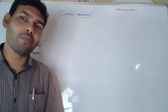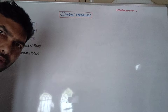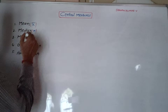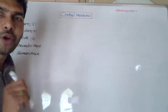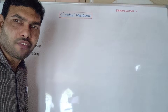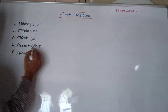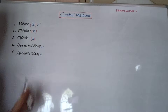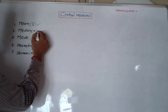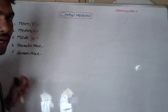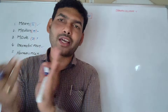In central measures, we have three main types. Mean, median, and mode. Under these, we also have geometric mean and harmonic mean. Central measures are classified into two types: positional measures and mathematical measures. Median and mode are positional measures.